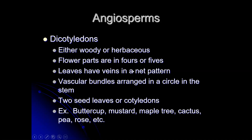Leaves have veins in a net pattern. Vascular bundles are arranged in a circle in the stem and in a star pattern in the root. When you sprout the seed, you get two little seed leaves coming up — these are called cotyledons. 'Di' means two, so two seed leaves — that's the name. Some examples: buttercup, mustard, maple tree, cactus, pea, rose, and the list goes on and on because there are hundreds of these.